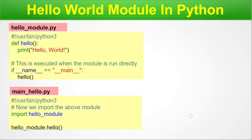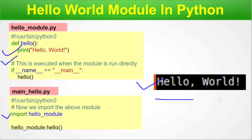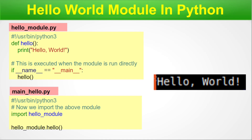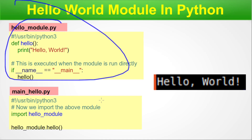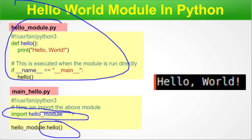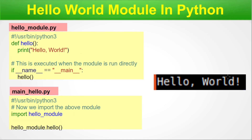Once we execute either this code directly or via the second file (with the first already in the current directory), we get the output: 'Hello, World'. This is how you write a Hello World function inside a Hello module and access it by importing the module and using the dot separator to call the hello function.